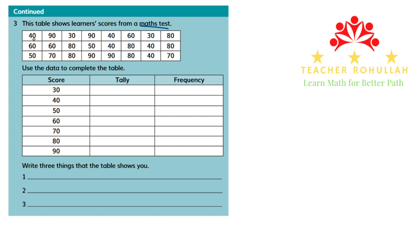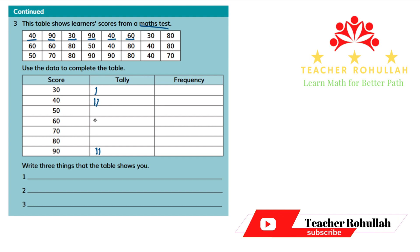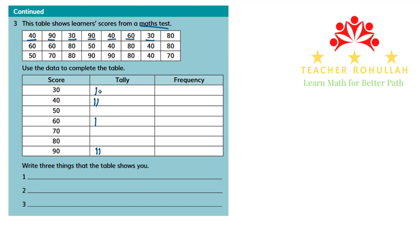Starting with the first one, we have 40 — one tally for 40. Then we have 90 — one tally for 90. We go step by step; this is why the tally chart is very important. Through the tally chart we can step by step collect and record the data. Then we have 30 — one tally for 30. Again 90 — one tally for 90. Then 40 — one more tally for 40. We have 60 — one for 60. Again 30 — one more for 30. Then 80 — one for 80.